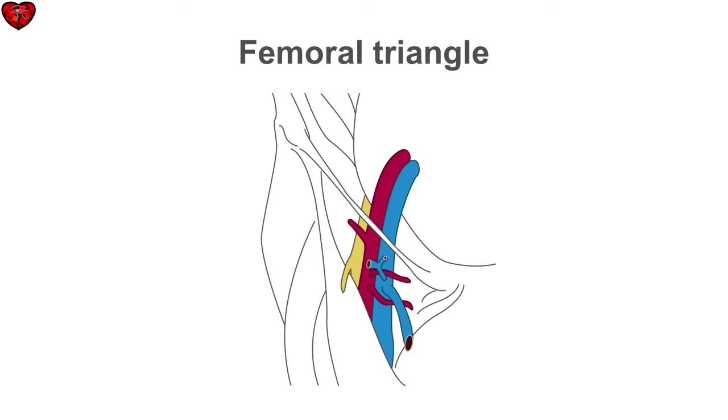The approach for placing a femoral venous line is in the femoral triangle. The approach is similar for placement on either the left or right side.